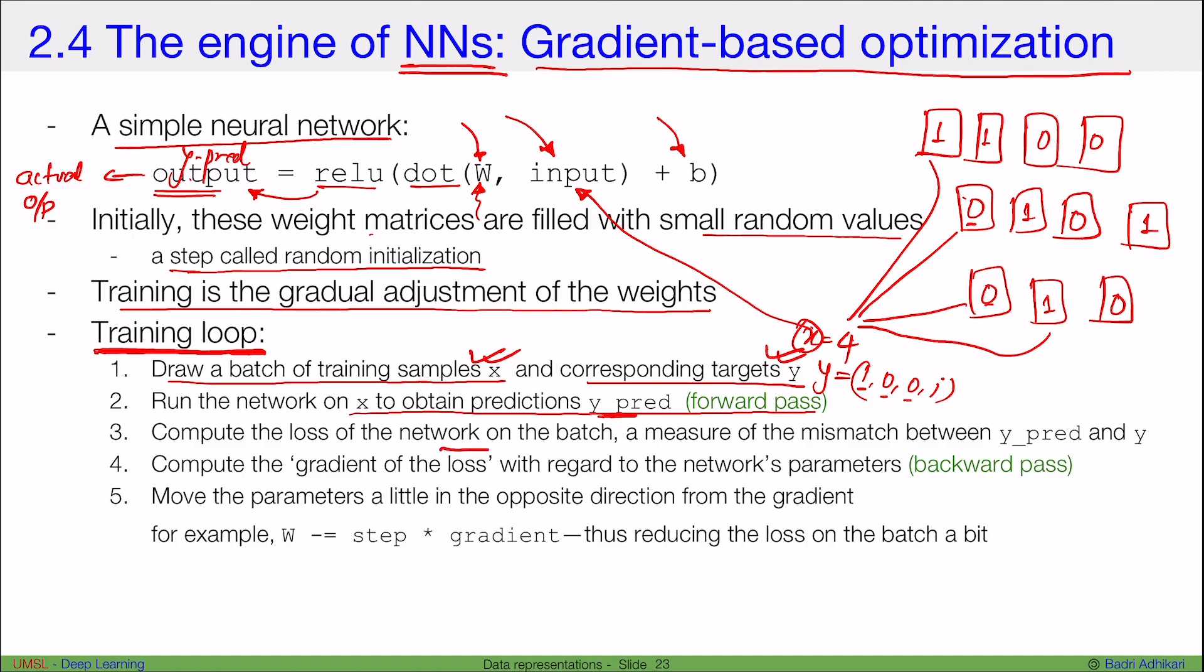Compute the loss of the network on the batch, the measure of mismatch between y_pred and y. So my y is the true output, and my y_pred is the predicted output. I calculate the loss, I can calculate accuracy, precision, any other thing, basically look at how many of the predictions are correct by looking at y_true, then I get the loss.